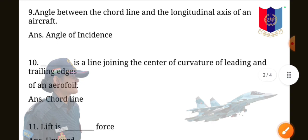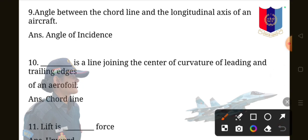Question 9 is angle between the cord line and the longitudinal axis of an aircraft. The answer is angle of incidence. Question 10: dash is a line joining the center of curvature of leading and trailing edges of an aerofoil. This is a little wrong. The answer is cord line.